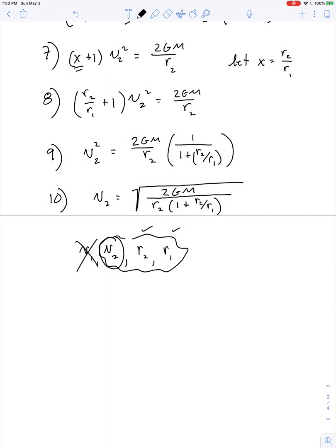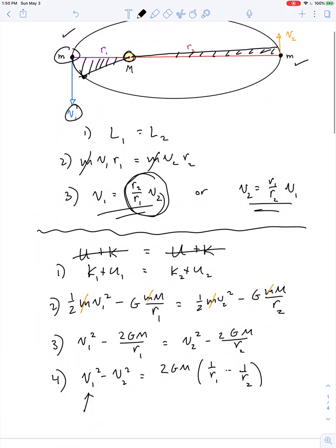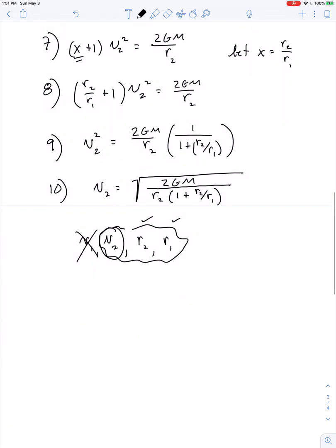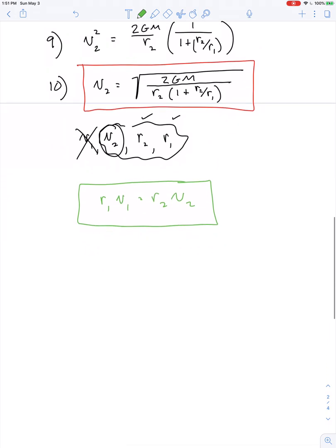And if you can figure out the speed at aphelion, don't forget, we also have the results of conservation of angular momentum. So if we put these two equations together along with R1 V1 equals R2 V2, then as long as we know any two of these four quantities, we can figure out the other two.